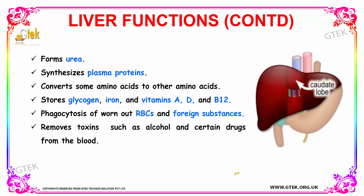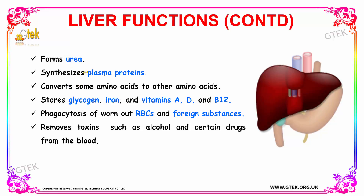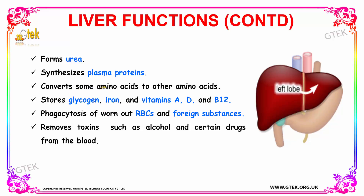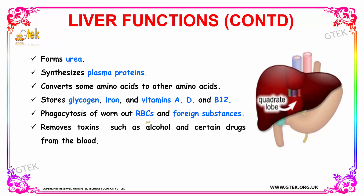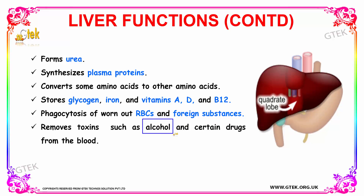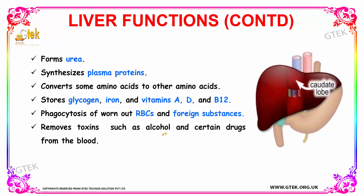Your liver forms urea and synthesizes plasma proteins. It converts some amino acids into other amino acids and stores glycogen, iron, and vitamins A, D, and B12. It performs phagocytosis of worn-out red blood cells and foreign substances, and removes toxins such as alcohol and certain drugs from the blood. These are the important functions of the liver.